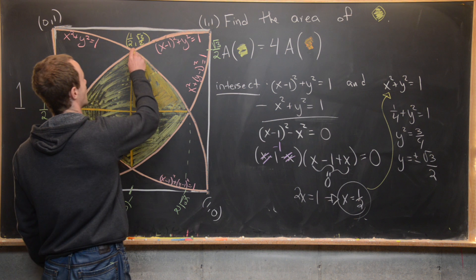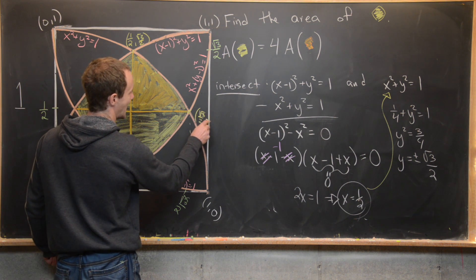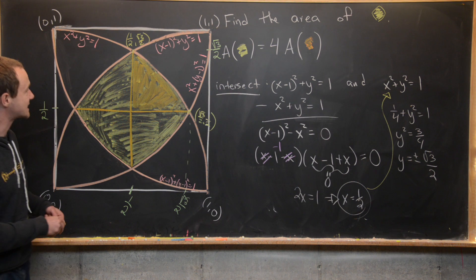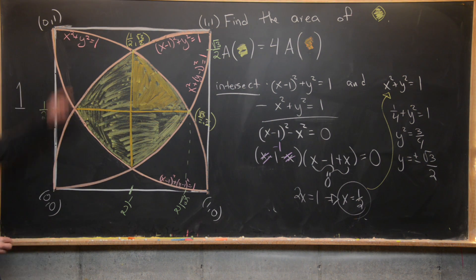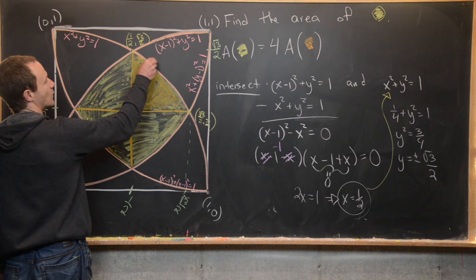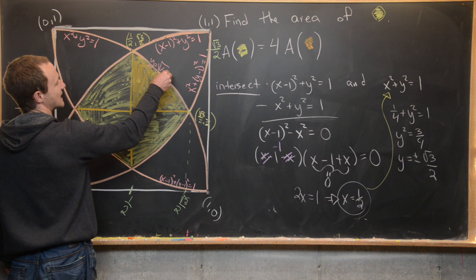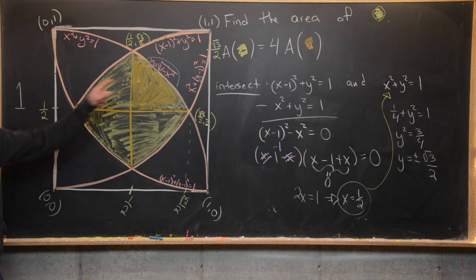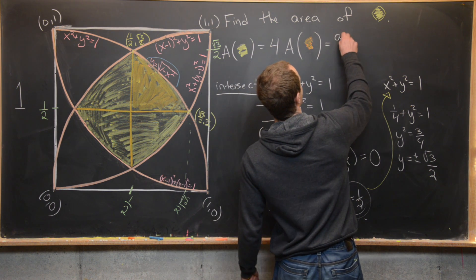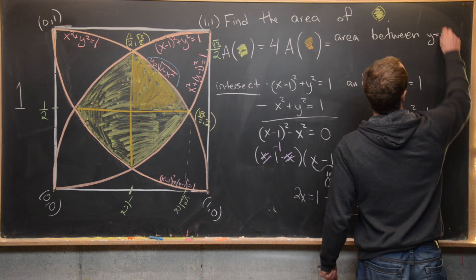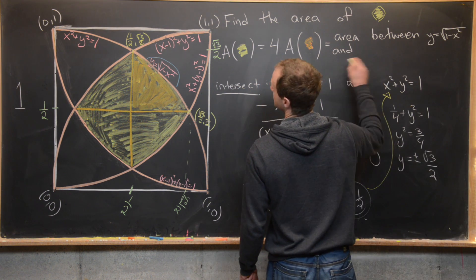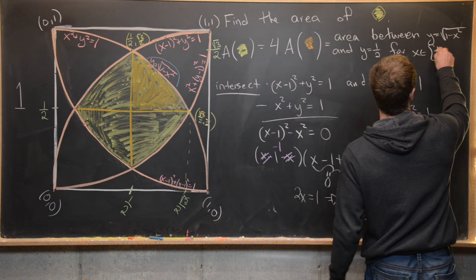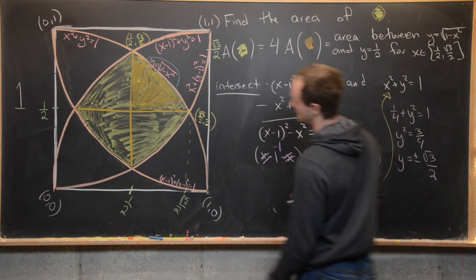Expressing the circle x² + y² = 1 as a function: since we want the top half, y = √(1 - x²). So the orange region is the area between y = √(1 - x²) and y = 1/2 for x on the interval [1/2, √3/2].